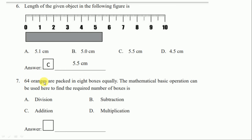Question number seven: sixty-four oranges are packed in eight boxes equally. The mathematical basic operation that can be used to find the required number of boxes — when distributing items like chocolates or oranges, we use division. So the correct answer is A, division.